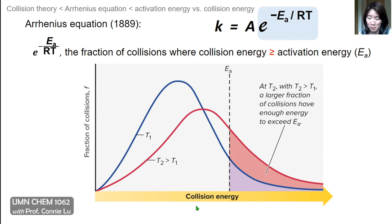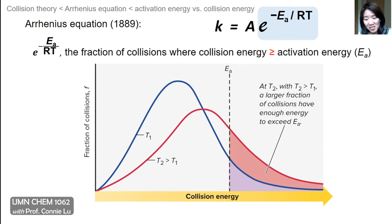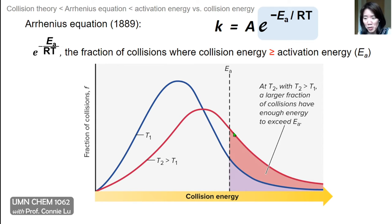What happens when you raise the temperature? T2 (the red curve) represents a higher temperature than T1. When temperature increases, all molecules move faster, so even though there is still a distribution of collision energies, the average collision energy is greater and closer to Ea. The fraction of collisions shown under the red curve is larger, meaning a greater proportion of collisions at this higher temperature now meet the energy requirement for a successful reaction.